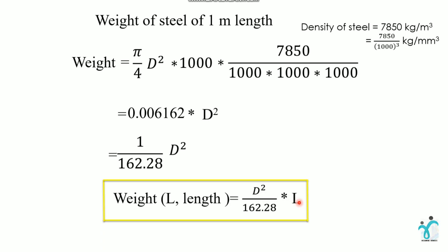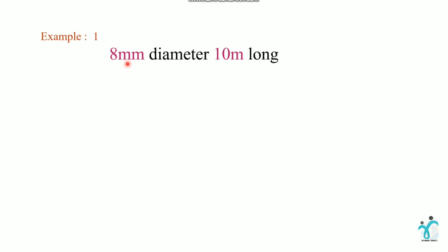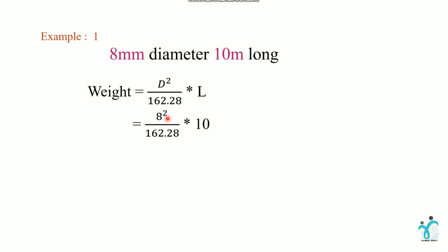Let's start with an example. The diameter is 8mm and the length is 10 meters. The equation is: 8² / 162.28 × 10. The weight of the steel bar is 3.95 kg.